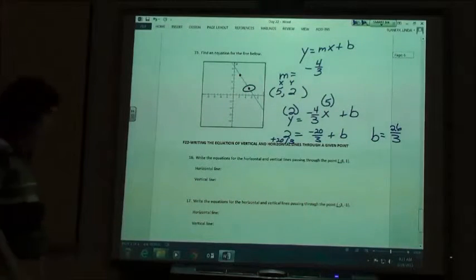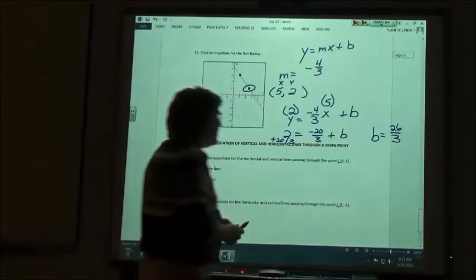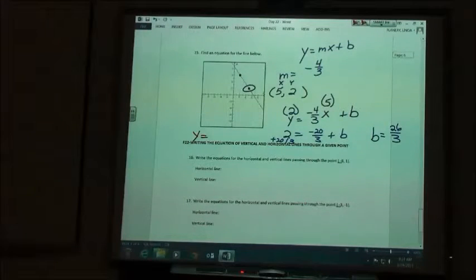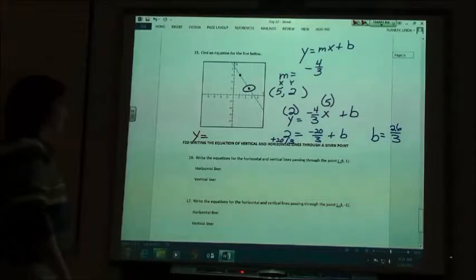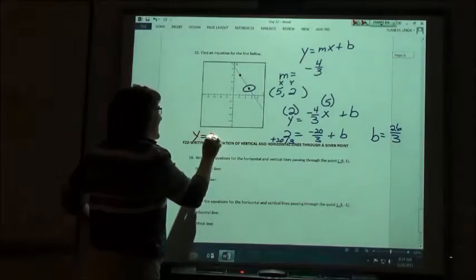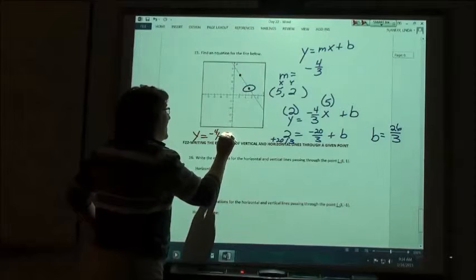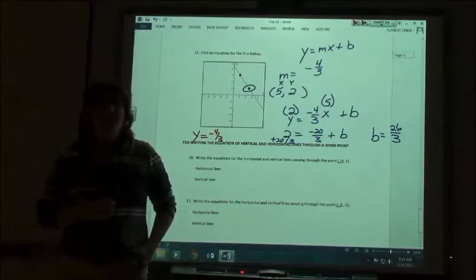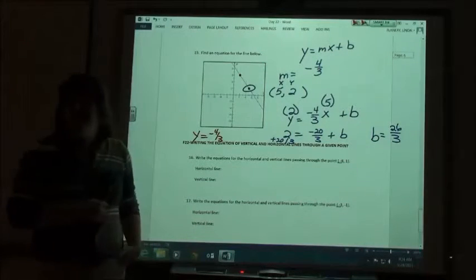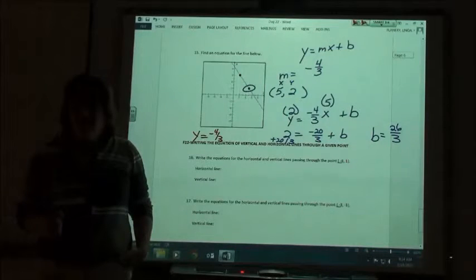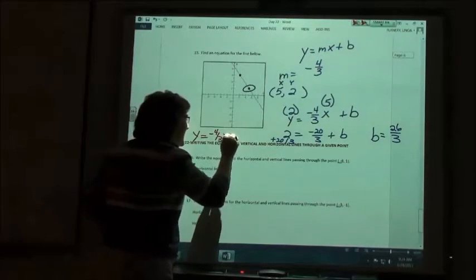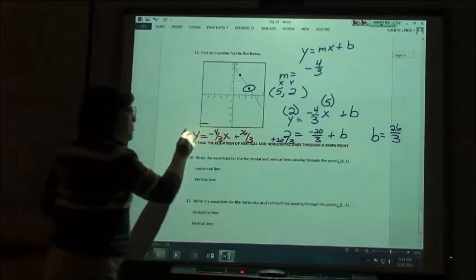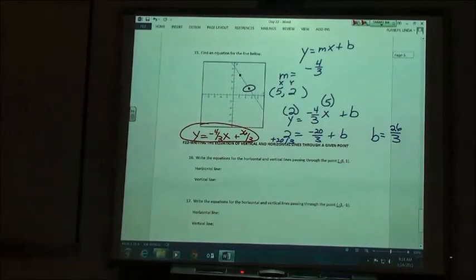I'm going to write it underneath my graph. So it's going to be y equals negative 4 thirds x plus 26 thirds. Now look at that, what you wrote down. Y equals negative 4 thirds. And what goes behind the negative 4 thirds? X. X plus 26 thirds, right? Don't forget the X on your answer.